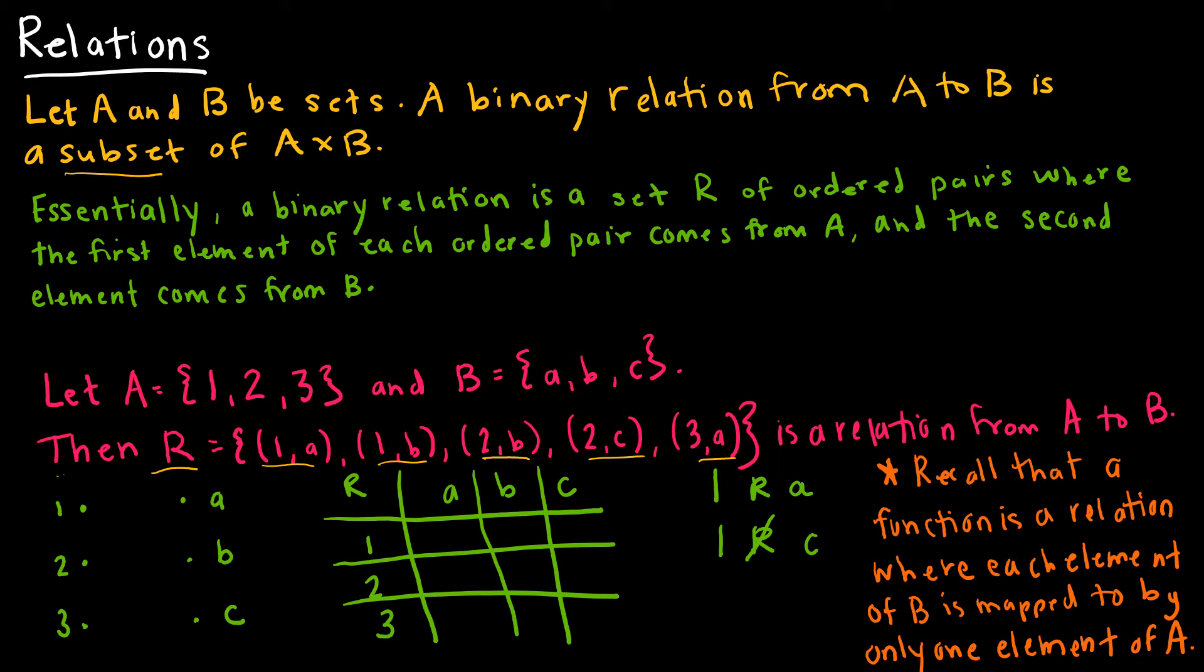There's different ways that you might see this represented. So we might say that 1 maps to a, that 1 maps to b, that 2 maps to b, 2 maps to c, 3 maps to a. So that's one way you might see this portrayed.